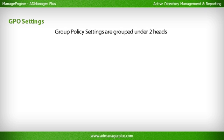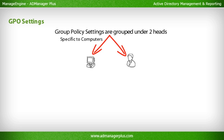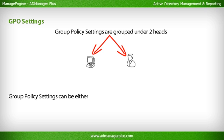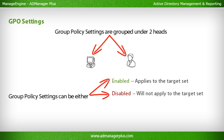GPO Settings — Group policy settings are grouped under two heads: Computer Configuration, where settings are specific to computers and take effect every time a user uses the computer; and User Configuration, where settings are specific to users and apply to the user regardless of the place or system they log in from. Whenever a policy setting is edited, there are three options: Enabled (the policy will apply and settings take effect), Disabled (the policy will not apply), and Not Configured (the setting is undefined and will have no impact on the target set).